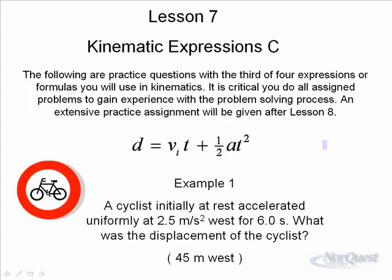A cyclist initially at rest accelerated uniformly at 2.5 west, 2.5 meters per second squared for six seconds. Here's the initial velocity. Now this is an interesting part right here. Anytime the initial velocity is zero, this equation actually just becomes d equals one half a t squared. Because whatever at is, if you multiply t by zero, you still get zero. So in this case, since VI is at rest, that means the initial velocity is zero.